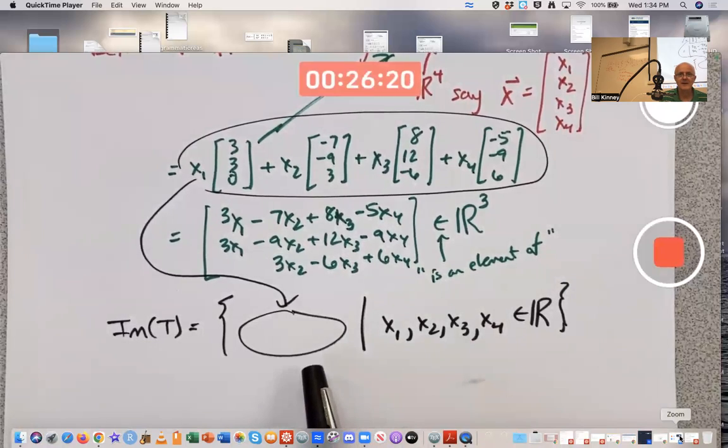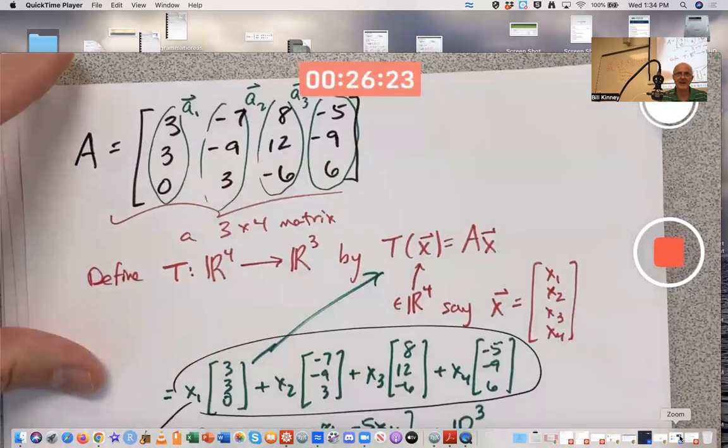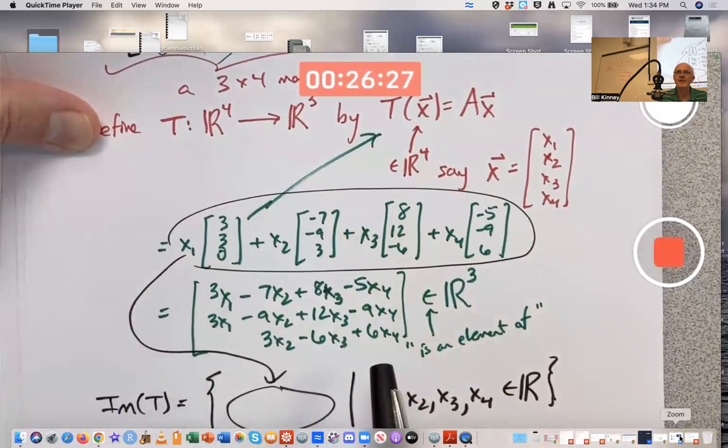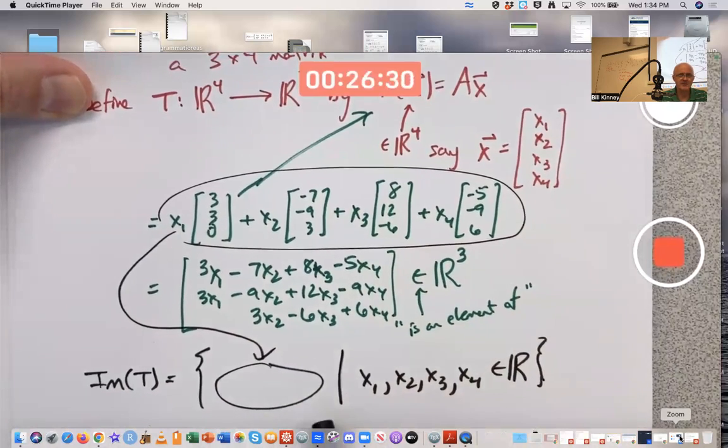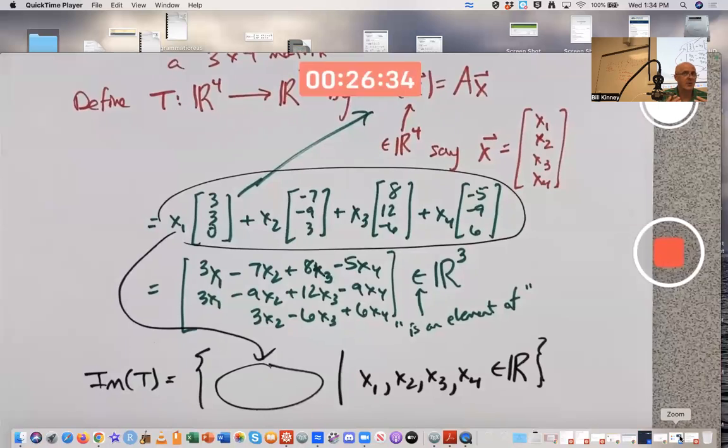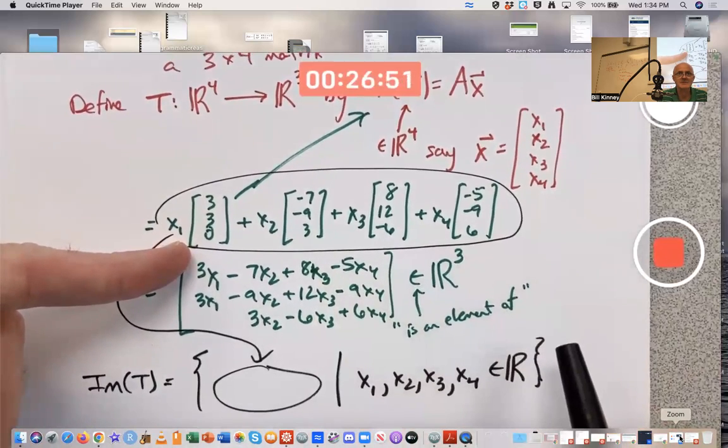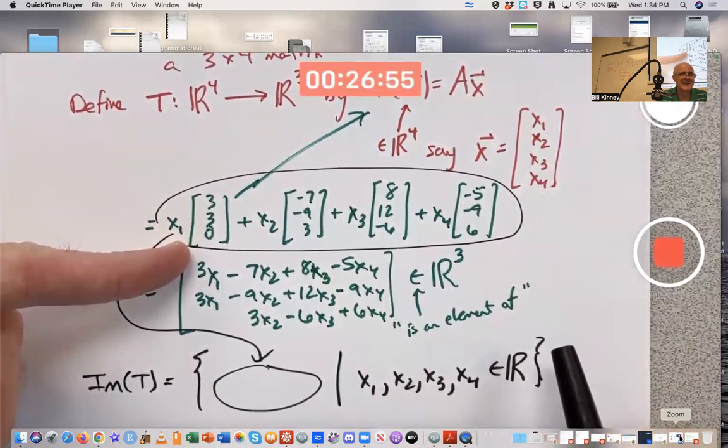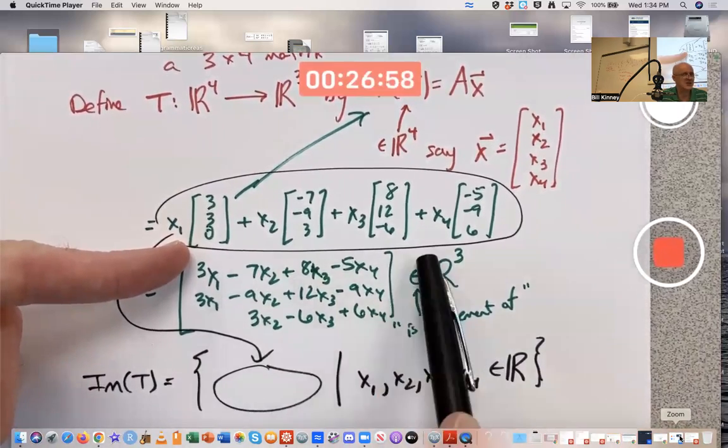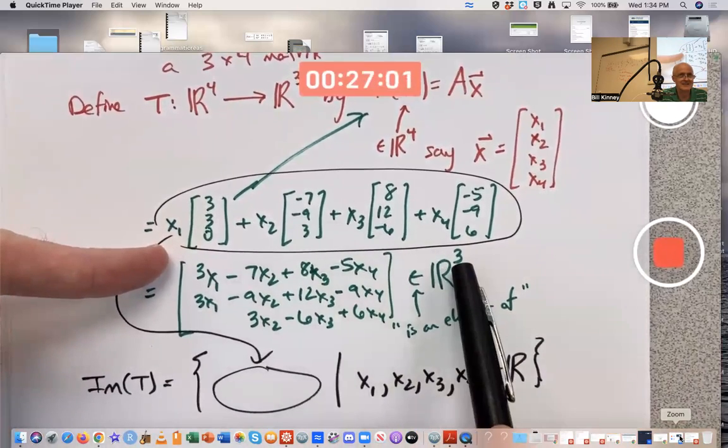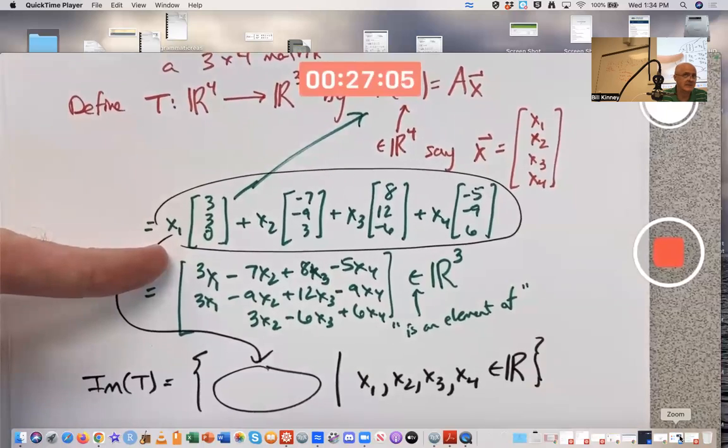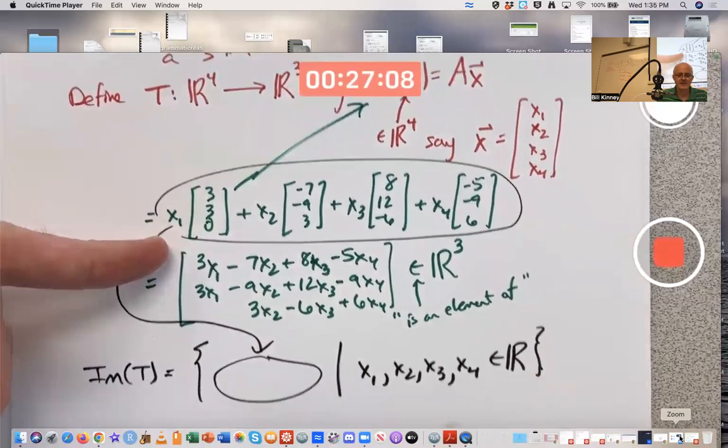I will tell you, though, that because I picked these numbers in a special way, this function's not going to be onto. This will not be all of three-dimensional space. It'll be, I'm just informing you, a two-dimensional plane through the origin in three-dimensional space. Not at all obvious that that's true. It seems like you should be able to get every possible three-dimensional vector as you vary these x's here. It looks like you should be able to get all three-dimensional space as you vary the x's, but I'm just telling you that won't happen. You're just believing me. That's good enough for the moment.